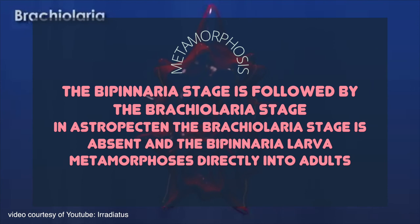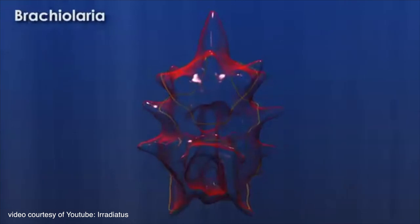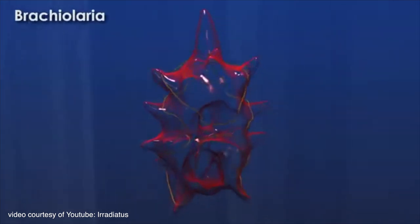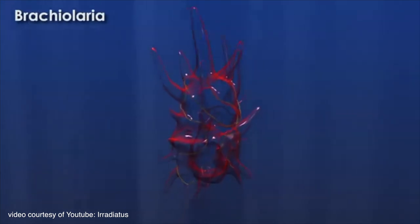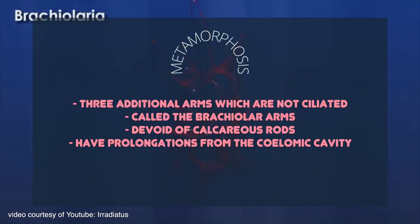In Astropecten, the brachiolaria stage is absent and the bipinnaria larva metamorphoses directly into adults. The brachiolaria stage is present in Asteroidea and is regarded as a modified form of bipinnaria larva. It possesses special features such as three additional arms which are not ciliated in their courses, except in bipinnaria papillata. These arms are called the brachyolar arms and are beset with warts to help in temporary adhesion. These arms are devoid of calcareous rods and have prolongations from the coelomic cavity.